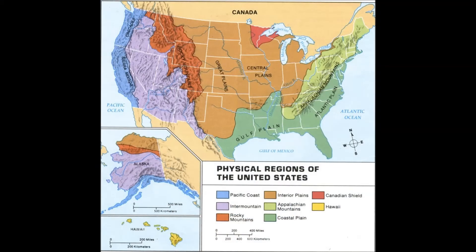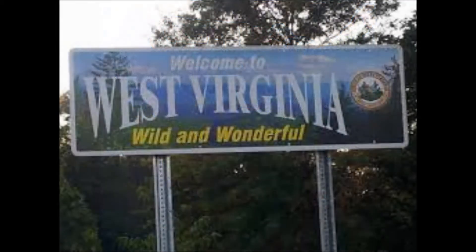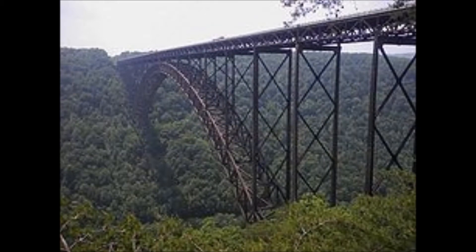Moving inland from the coastal plains, we come to the Appalachian Mountain region, which is the light green highlighted portion you see on the map. As the oldest mountain region in the U.S., it spans over nine states, from as far north as Maine all the way to Alabama in the south. West Virginia is a truly unique state because it is the only state that is completely encompassed by this region.